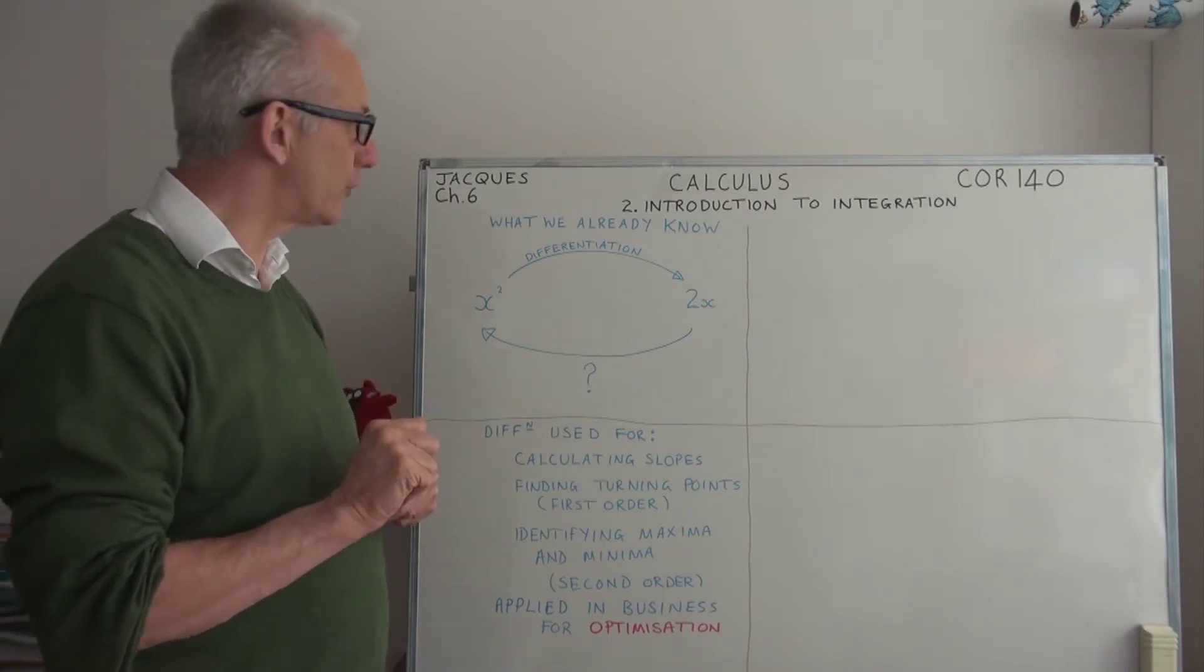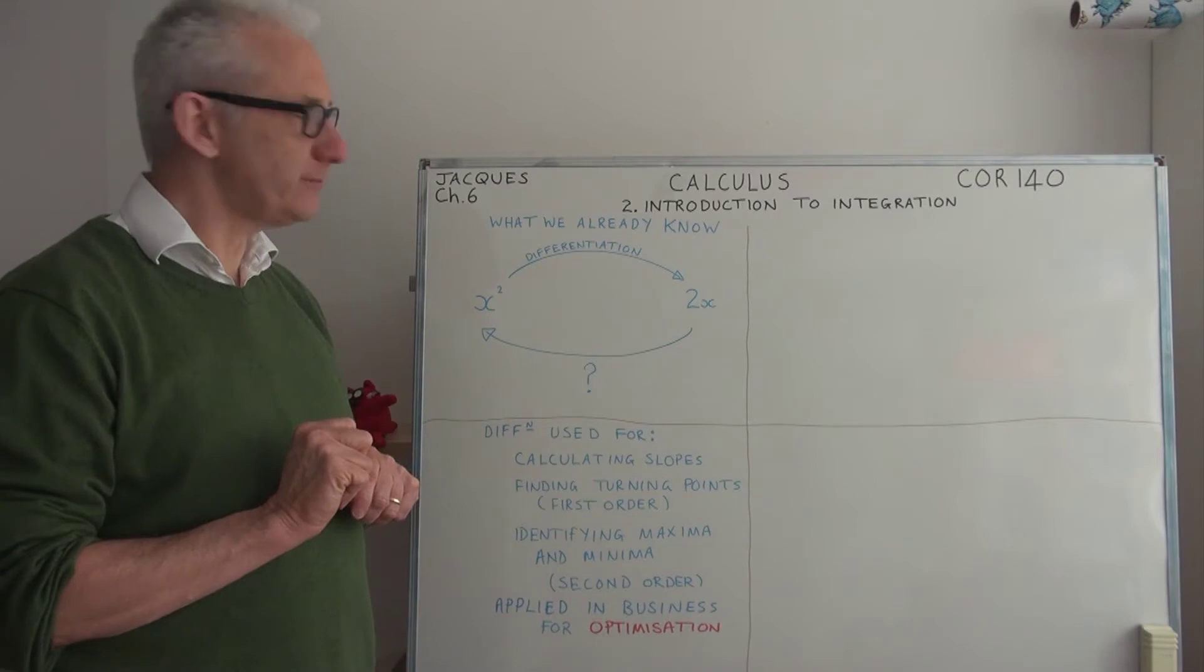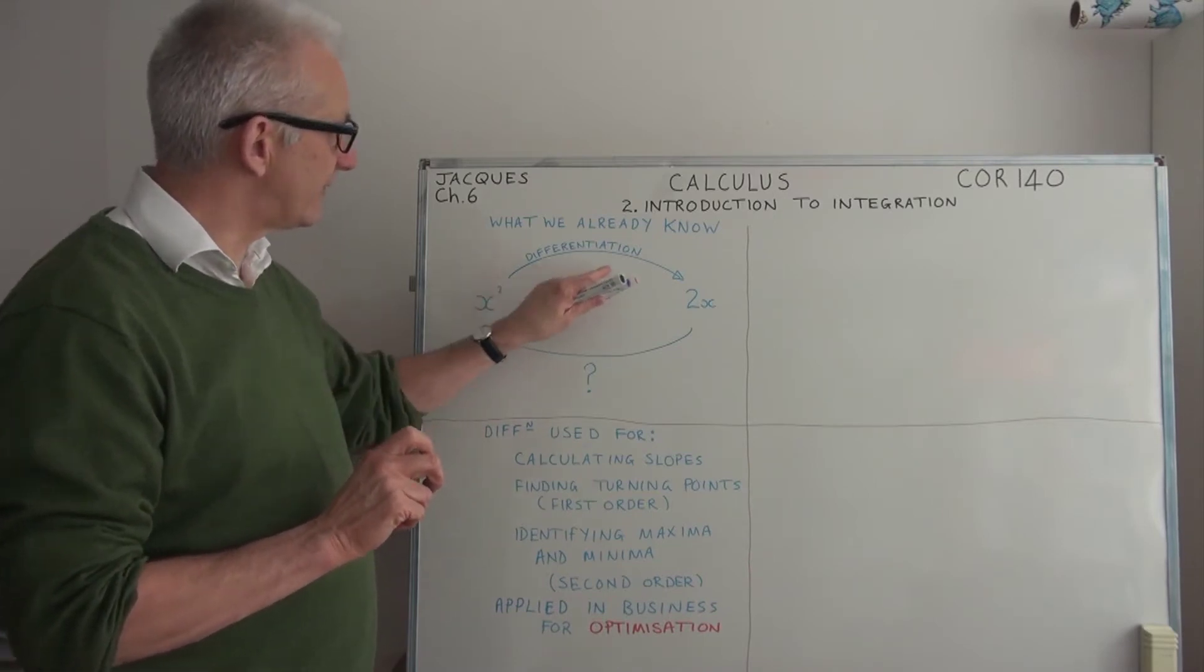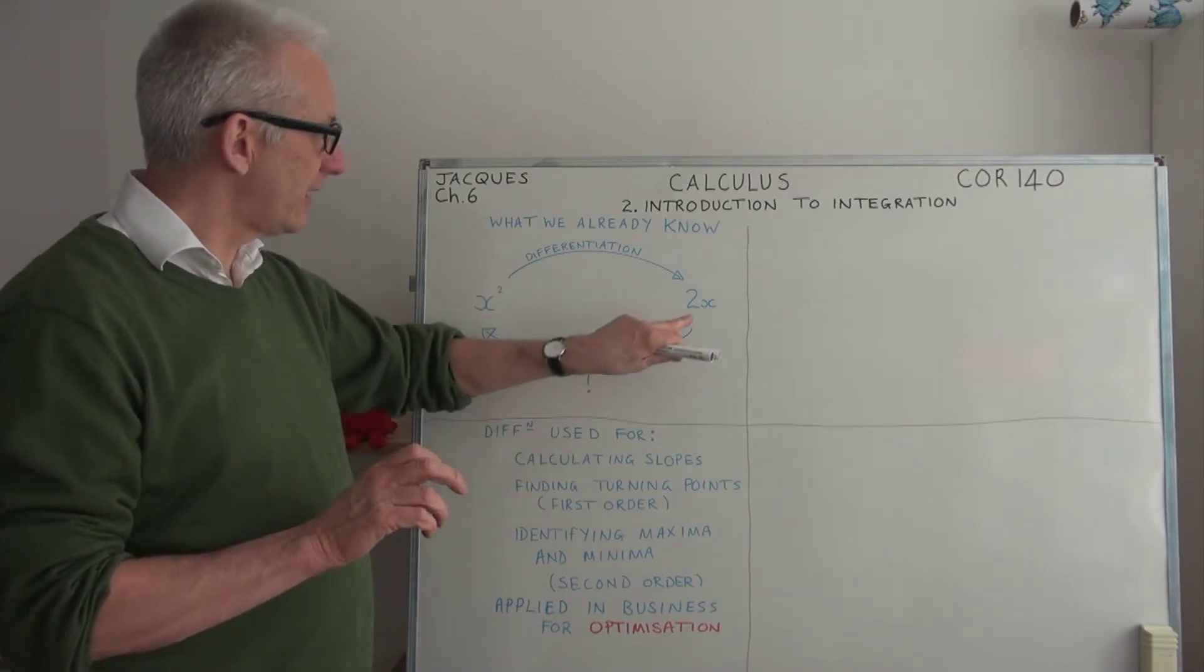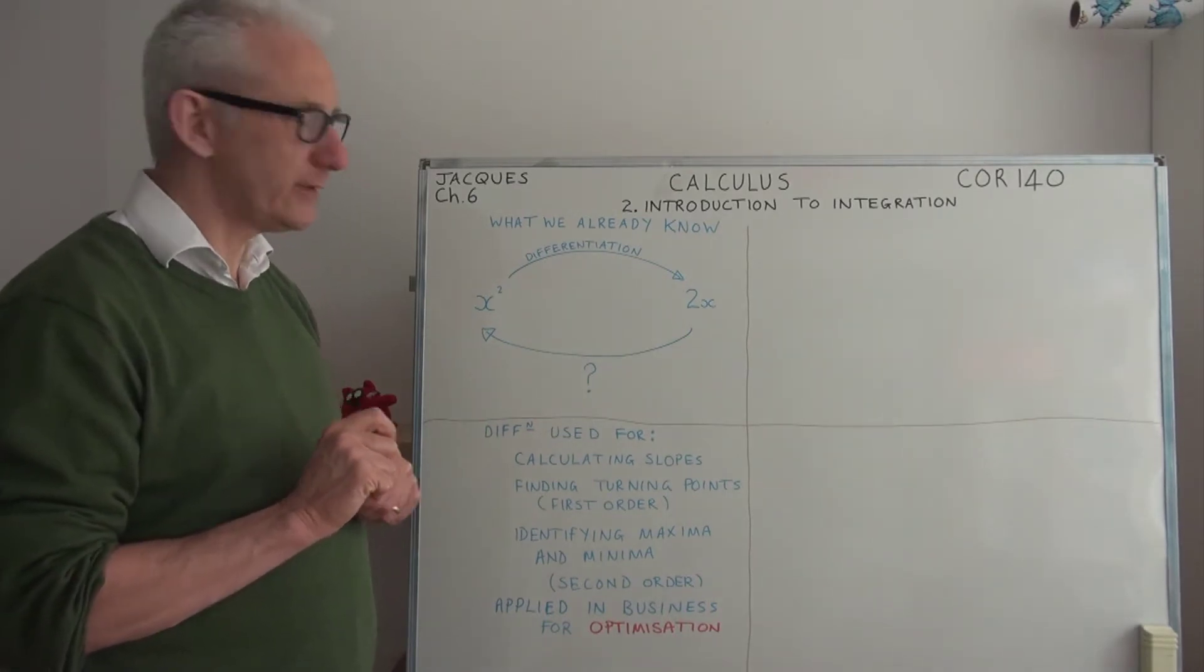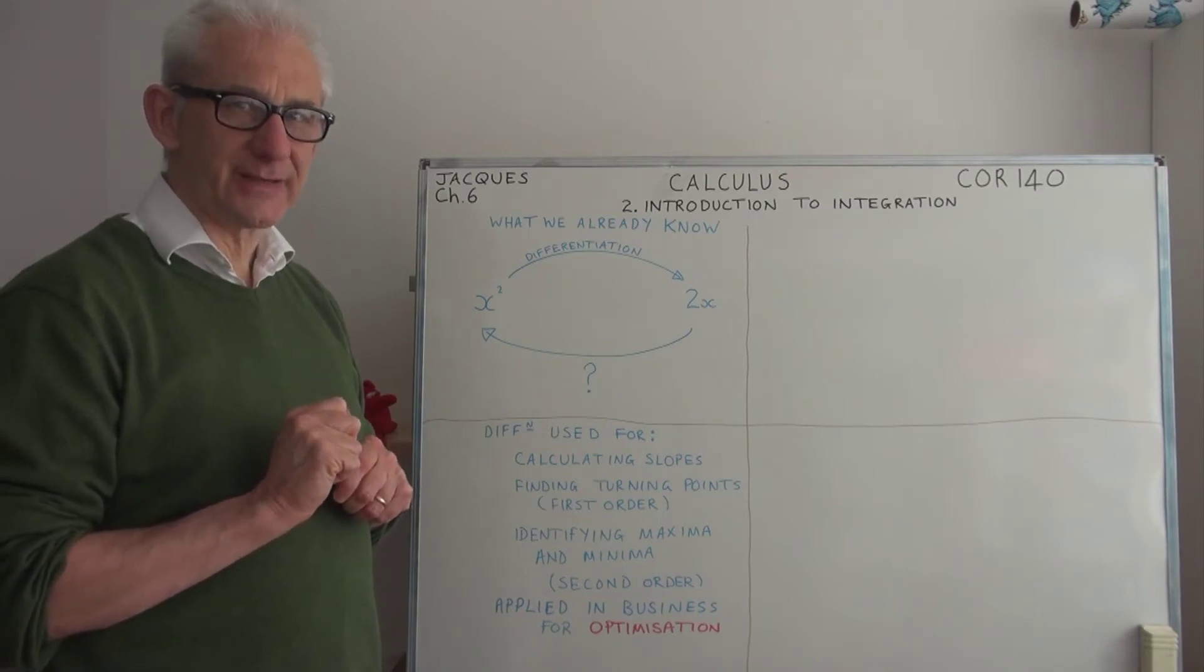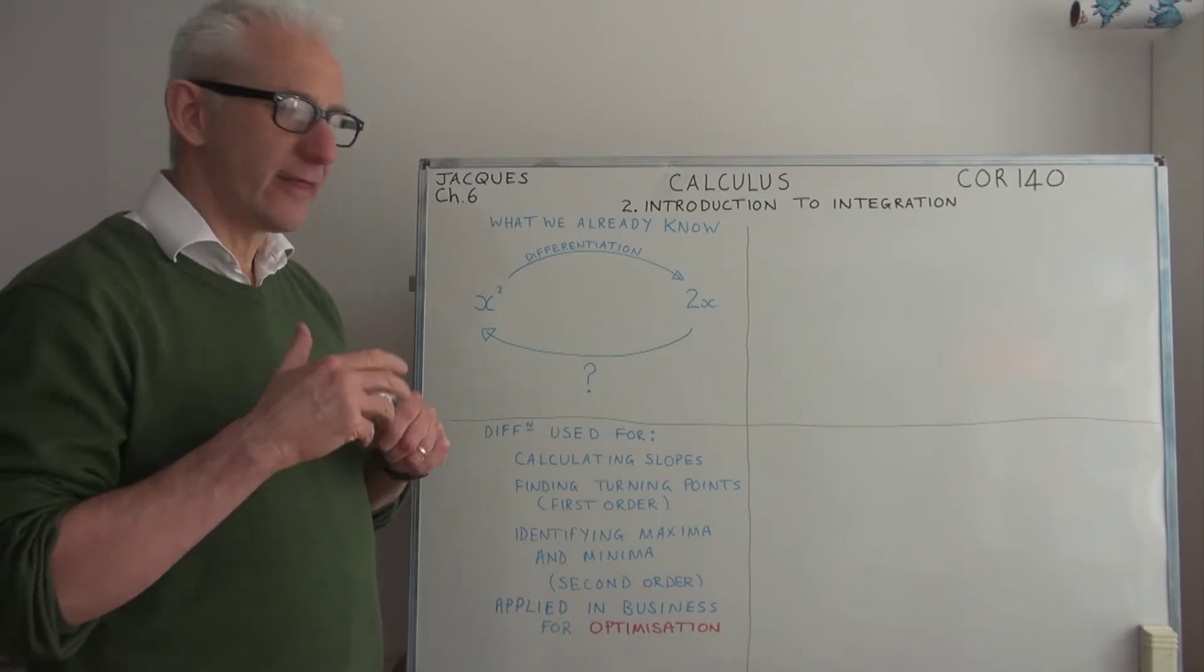Before we start, let's remind ourselves what we already know. We can take a function, differentiate that function, and arrive at another function which is the slope of the original function. In mathematics, it's always true that if you can apply an operation to something like a function, in this case differentiation, then we should be able to apply a reverse operation.